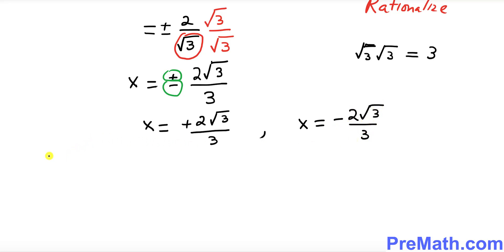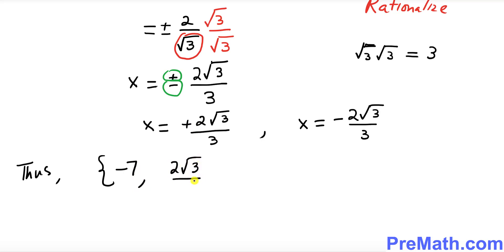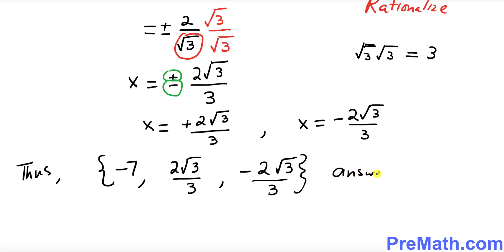We now have three solutions: x equals negative 7, x equals positive 2 square root of 3 over 3, and x equals negative 2 square root of 3 over 3. These are our three solutions and that is our answer.